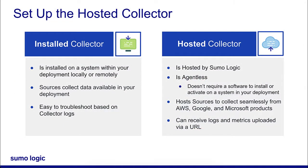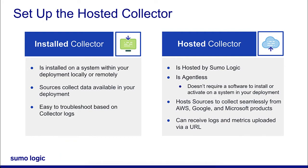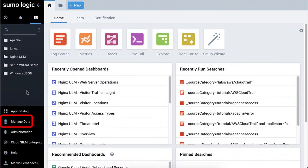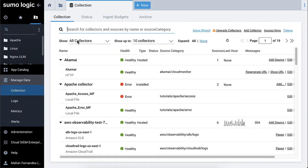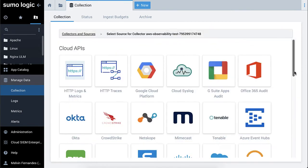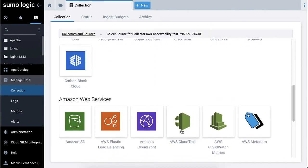Next, set up your hosted collector. If you need help setting up a hosted collector, visit our YouTube Micro Lessons playlist to set up a hosted collector. Go to the Collections page and choose your hosted collector, then click Add Source and select AWS CloudTrail source.